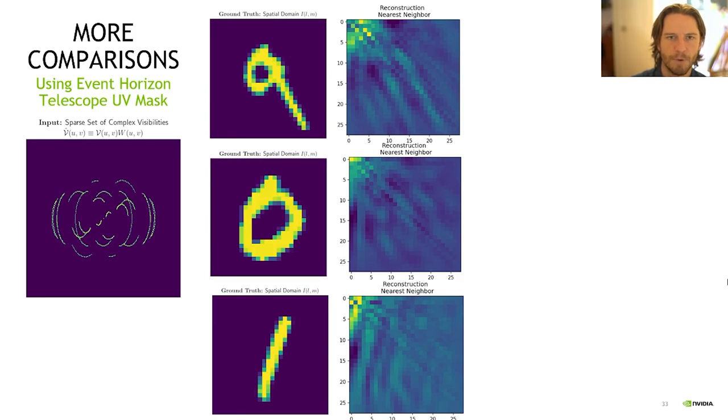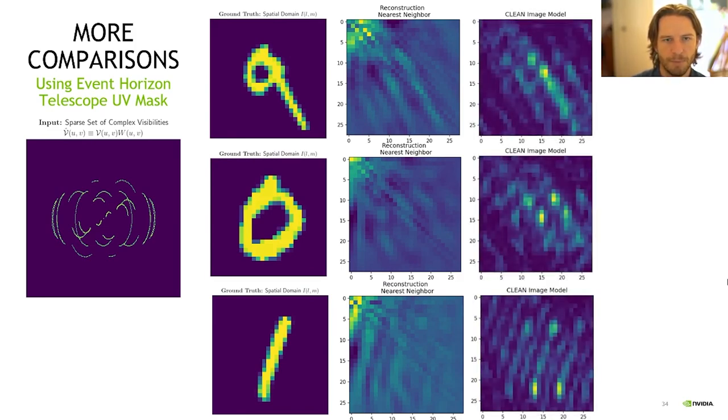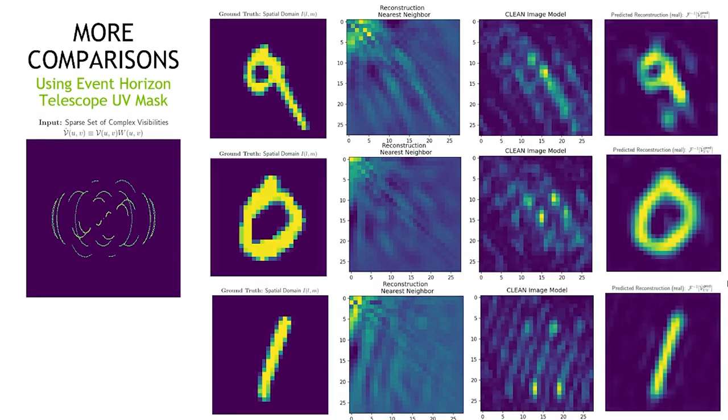Here, we show more examples against the interpolation baselines. The output of the CLEAN algorithm. Using our proposed meta-learning implicit neural network approach, we can recover more details given very sparse sets of complex visibilities.